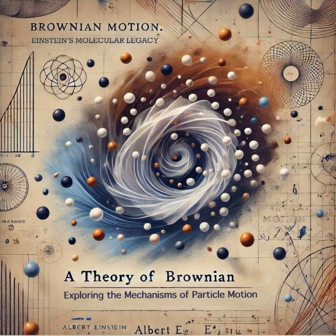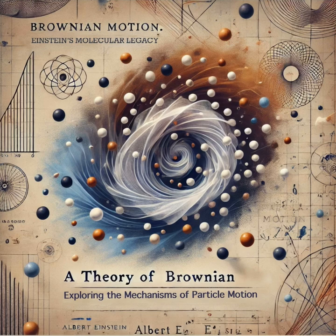But we still haven't talked about how he figured out the size of atoms. Remember Avogadro's number? It's like that really big number that tells you how many atoms are in a mole of substance — 6.022 times 10 to the 23rd power. Well, Einstein figured out that his formula for the mean squared displacement could actually be used to calculate Avogadro's number. You can learn about something as fundamental as the number of atoms in a mole just by watching tiny particles jiggle around. He connected these seemingly unrelated concepts in a way that no one had ever done before.